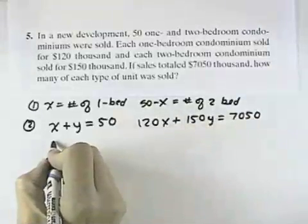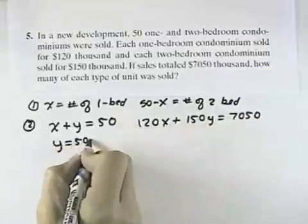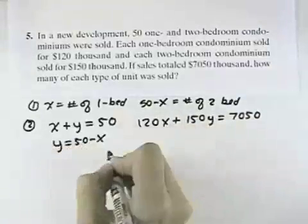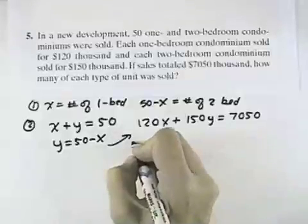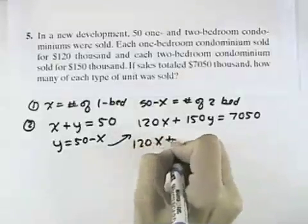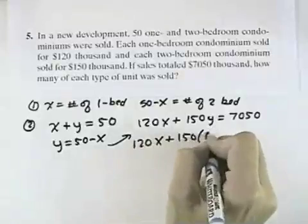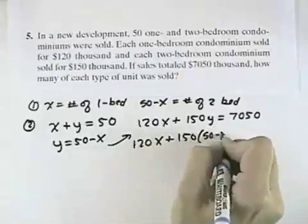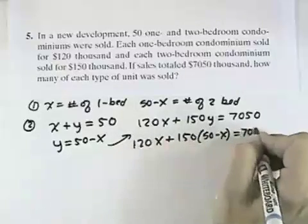So here we can see that Y does equal 50 minus X, so we can substitute that into our other equation to get 120X plus 150 times (50 minus X) equals 7,050.